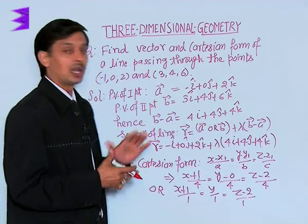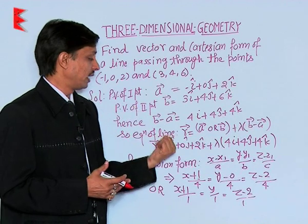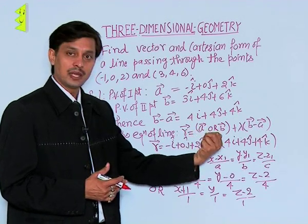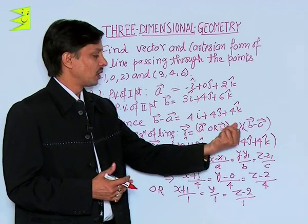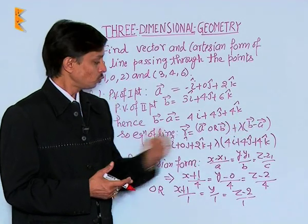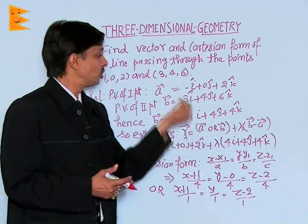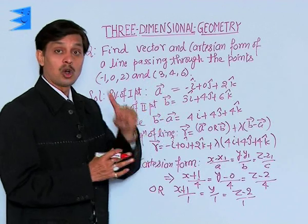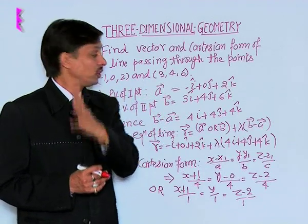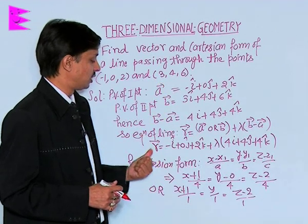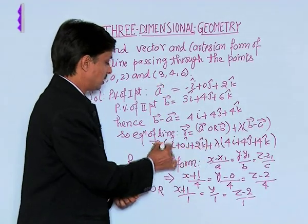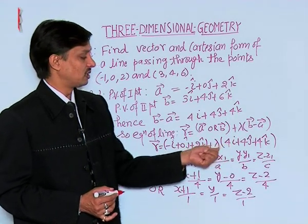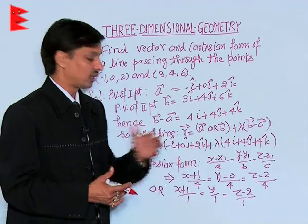Now, the equation of the line. As told in the previous video, R equals A plus lambda times (B minus A). Here I am using position vector A, which is minus i plus 0j plus 2k. Hence, the vector form of the line is R equals (minus i plus 0j plus 2k) plus lambda times (4i plus 4j plus 4k). This is the vector form.